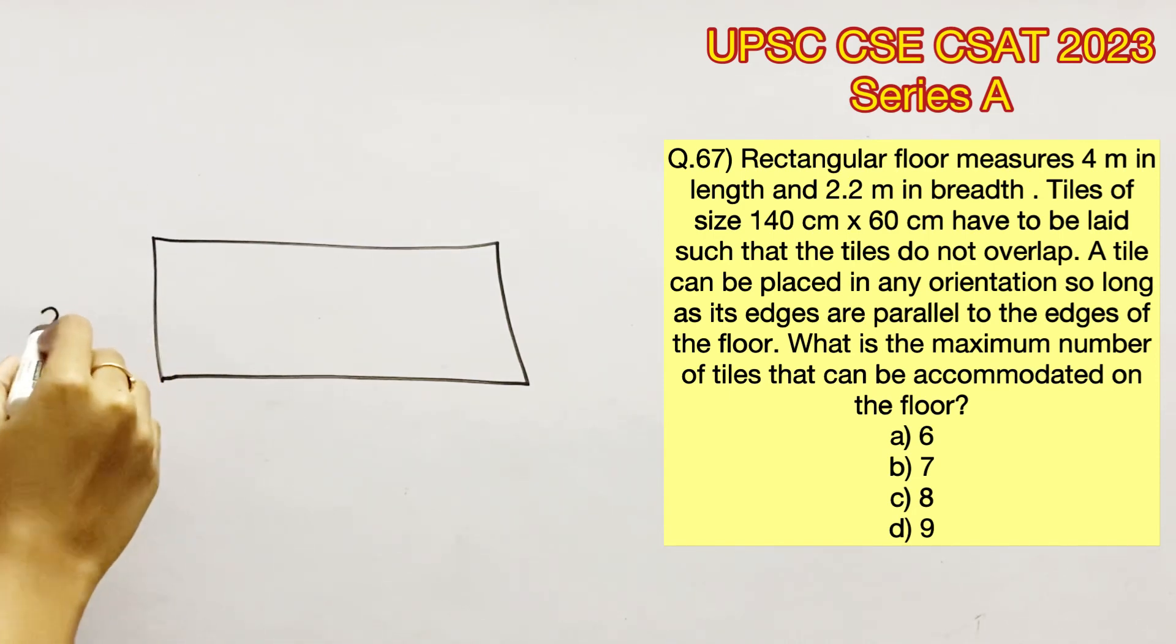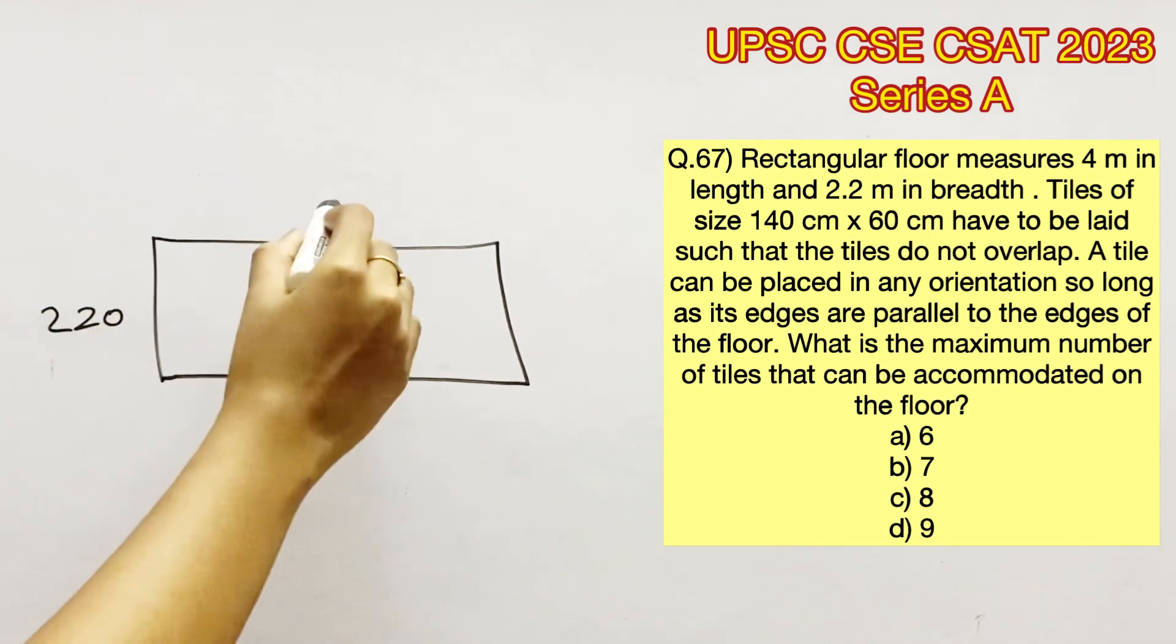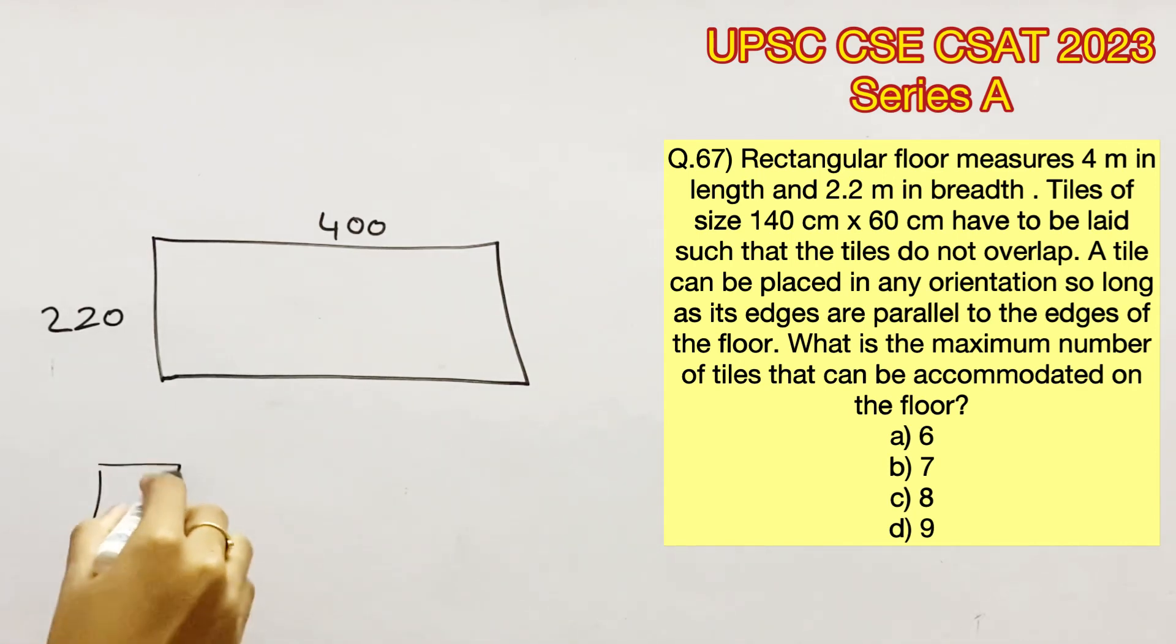There is a rectangular floor that measures 4 meters in length and 2.2 meters in breadth. When we convert it to centimeters, we will get 400 centimeters in length and 220 centimeters in breadth, because 1 meter is equal to 100 centimeters.